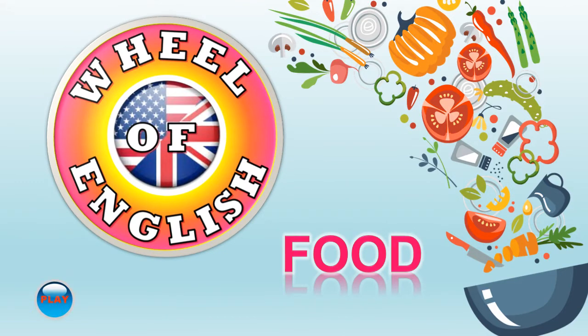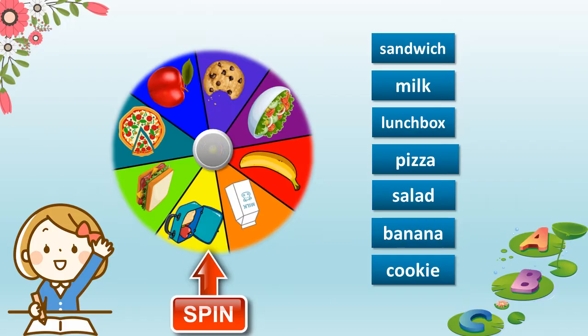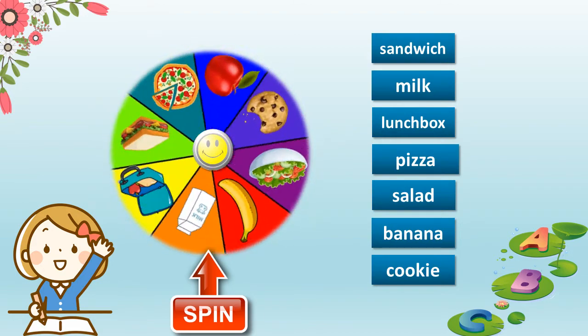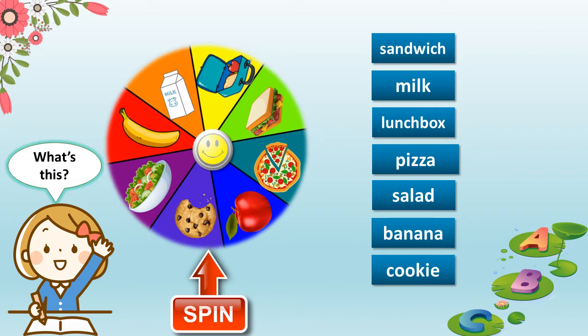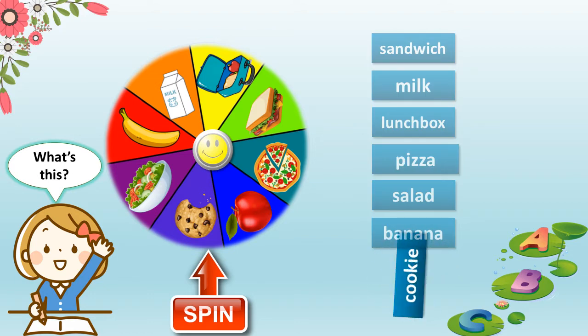First of all, I would like you to play a game: Wheel of English. Now I will make an example. First, you spin. Look at the picture and tell me what's this. Very easy. It's a cookie. Is it right? Yes. Are you ready to play? Okay, let's start.